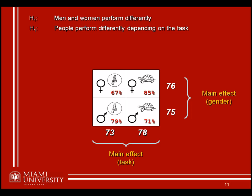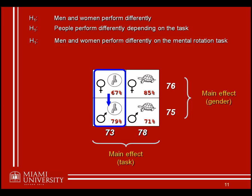There are other effects we can look at as well. Consider the hypothesis that men and women perform differently on just the mental rotation task. Notice how this is different from the main effect of gender, which compares all males and females regardless of task. Here we're asking: just for the mental rotation task, is there a difference between males and females? We compare not marginal means but the group means for those specific groups — the 67 versus the 79%. This is a simple effect: the effect of one variable at just one level of the other.